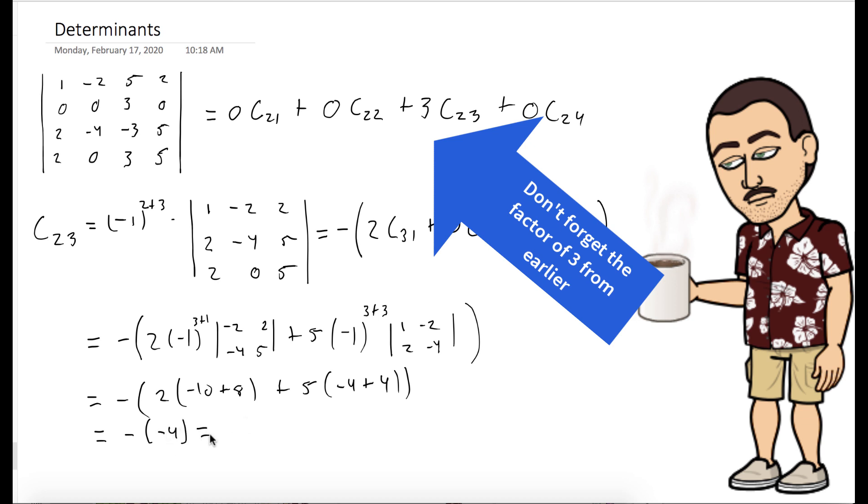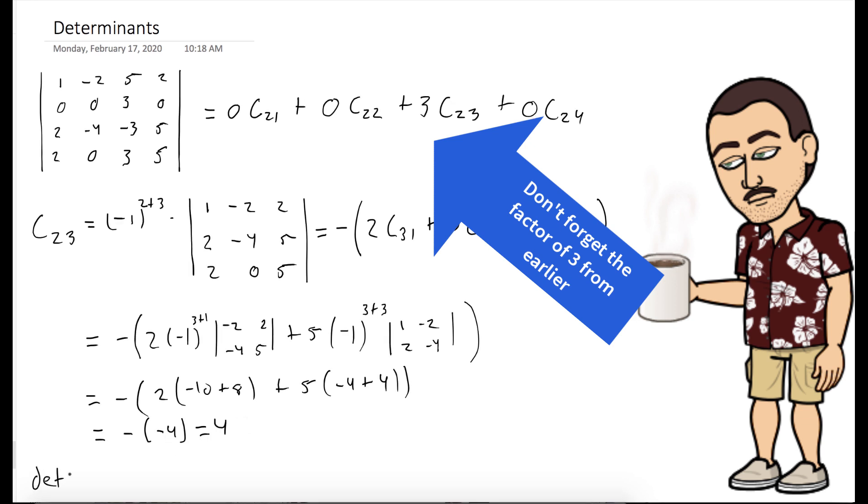We get 4, and now we'll multiply it by the factor of 3 that we had from the beginning, and we see the determinant of our matrix is 12.